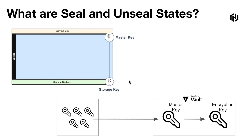Information stored in the storage backend is encrypted using a storage key, which is encrypted by the master key. No secret leaves the cryptographic barrier in unencrypted form. This barrier is protected by a set of keys, and information served through the HTTP API is encrypted by TLS. When vault is initialized, it creates an encryption key that processes all its data. The encryption key is protected by the master key, and by default vault uses Shamir's secret sharing algorithm to split the master key into shares.